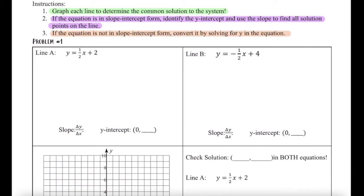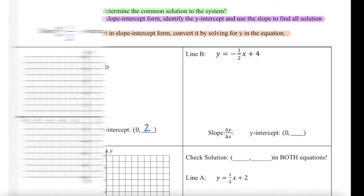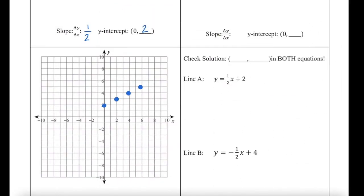Let's get started. The first equation, line A, is in slope-intercept form. So the slope of this line is the multiplier of x, and the y-intercept of this line is our constant. So our slope here is 1 over 2, and our y-intercept at 0, 2. Let's graph that line. And since this line had a name, it was labeled as line A, I'm going to go ahead and label that line A.